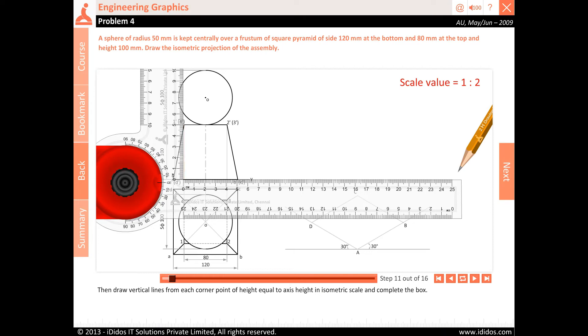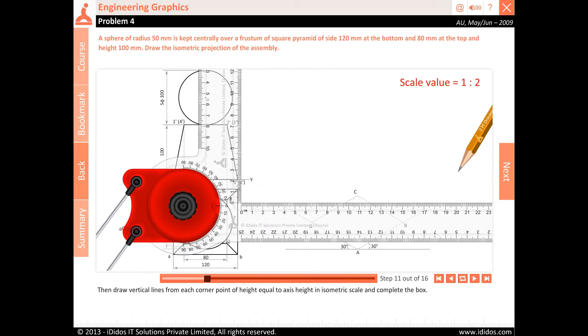Then draw vertical lines from each corner point of height equal to axis height in isometric scale and complete the box.